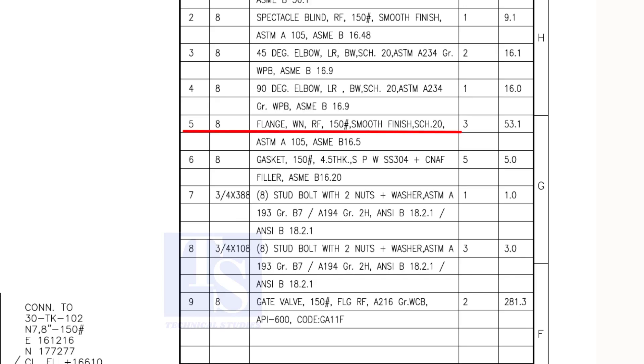Item number 5 is weld neck raised face flange, the rating is 150 pound. Item number 6 is spiral wound gasket, and item number 8 is stud bolts. Both these items are not relevant for pre-fabrication unless the pipe length is not affected.